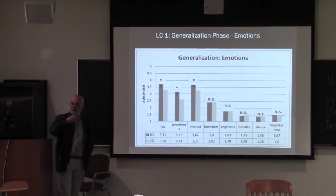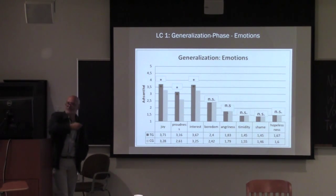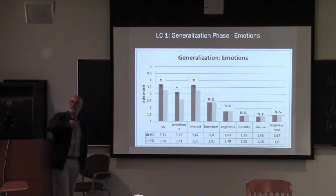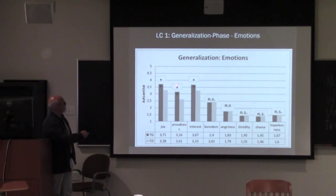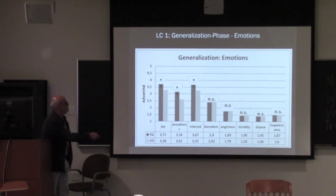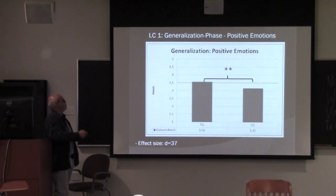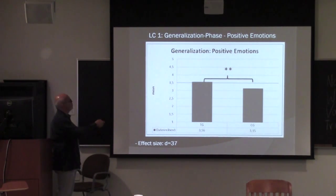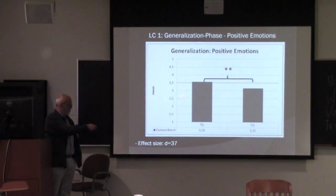Now the generalization phase — the last phase. According to Whitehead this is a return to romance, and students again get a task with freedom to explore. Again we have highly significant more joy in the learning cycle, more proudness in the learning cycle, more interest in the learning cycle. The others are non-significant. And again, if we combine joy and the other measures to build a scale of positive emotions, we have a highly significant difference between the two groups in favor of the learning cycle.